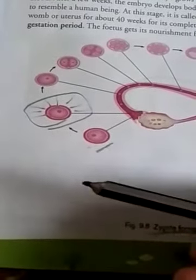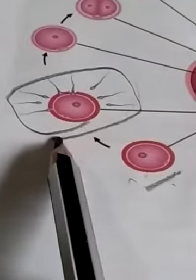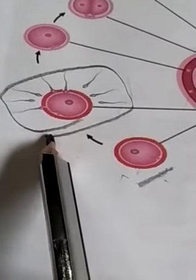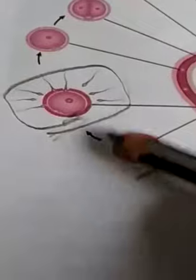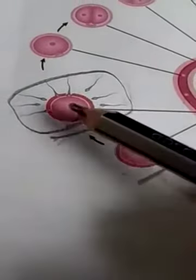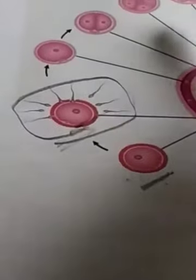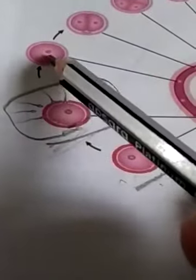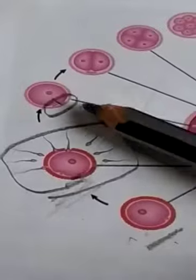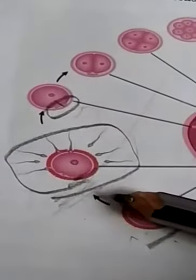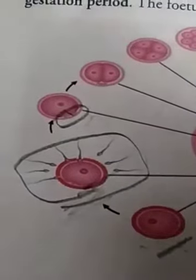As we saw in the previous part, out of 100 sperm only one is capable of fusing with the egg. Here you can see one sperm is entering this egg out of 100.